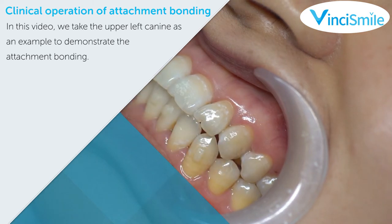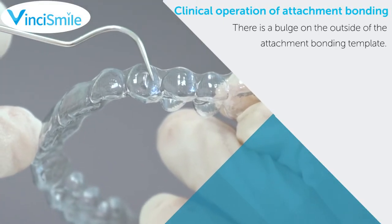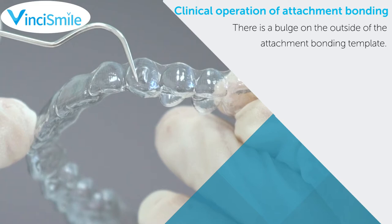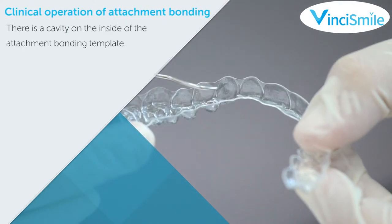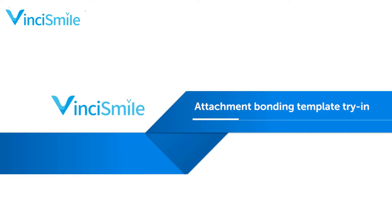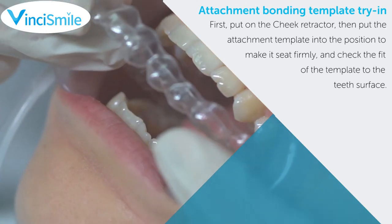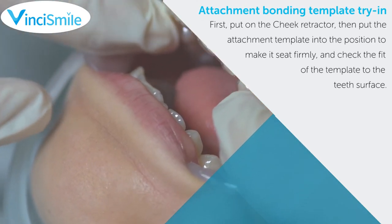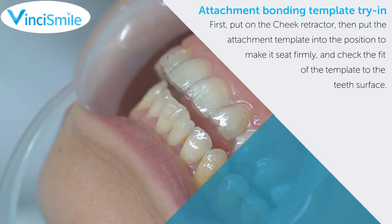In this video, we take the upper left canine as an example to demonstrate the attachment bonding clinical operation. There is a raised surface on the outside of the attachment bonding template, and a cavity on the inside. Attachment bonding template try-in: first put on the attachment bonding template into position to make it sit firmly, and check the fit of the template to the tooth surface.